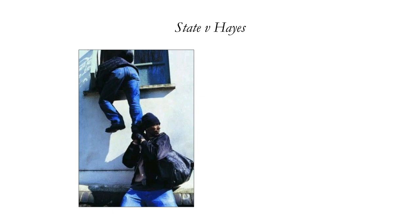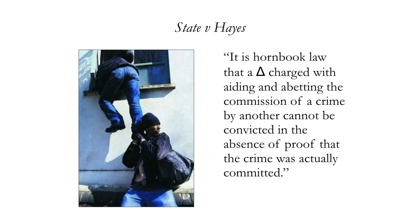Setting the larceny charge aside, let's focus on burglary. Burglary is, roughly speaking, entering a building with the purpose of committing some felony once inside. Hill entered, but Hayes did not. Can Hayes be convicted as Hill's accomplice? He cannot. It is Hornbook law that a defendant charged with aiding and abetting the commission of a crime by another cannot be convicted in the absence of proof that the crime was actually committed.